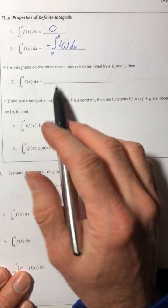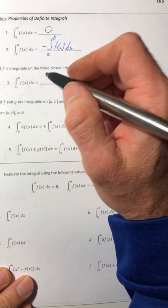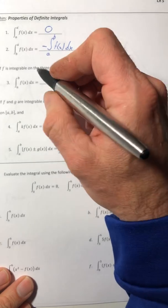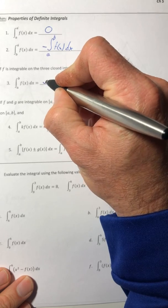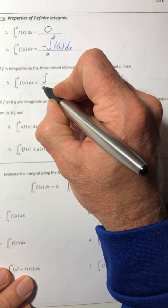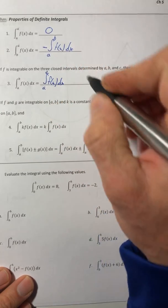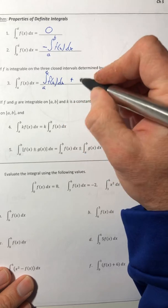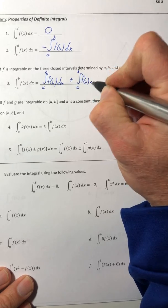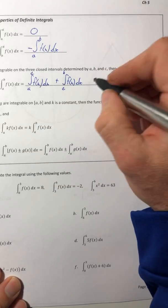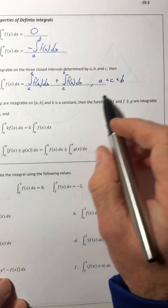The third one, which you can do, and this one's kind of cool that every once in a while it comes into play, especially next semester. Hint, hint. You can break an integral up. So you can go from A to C of f(x) dx plus the integral from C to B of that same function, and that's provided that C is somewhere between A and B.